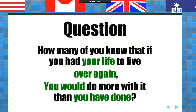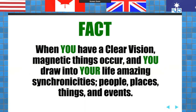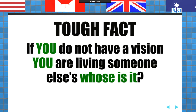If you had your life to do over again, would you do more with it than what you have done? If you had to do it all over again, don't you think we could have done more? When you have a clear vision, magnetic things occur — that's the secret. You draw people, places, things, and events into your life. What I want you to do is hone in on who you want to be, what you want to do, what you want to have. If you don't have a vision, you're probably living someone else's. Am I living my vision or am I living somebody else's?